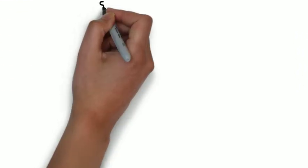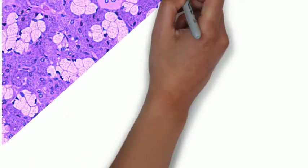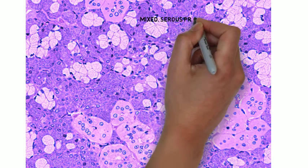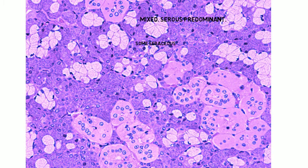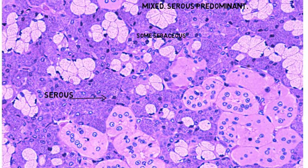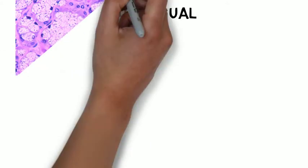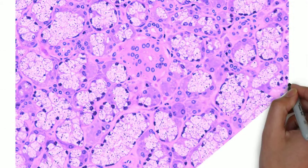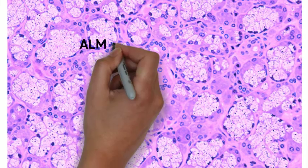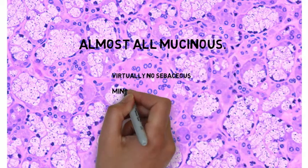The submandibular gland is comprised of a mixture of serous and mucinous glands, with serous predominating. There are also some sebaceous glands in smaller numbers. The serous glands have dark blue cytoplasm and open nuclei. The mucinous glands have a lighter blue to pink cytoplasm, are plump, and have eccentric nuclei with condensed chromatin. You also see intercalated ducts in some slides. The sublingual gland is comprised entirely of mucinous glands, with very few serous glands and virtually no sebaceous glands.